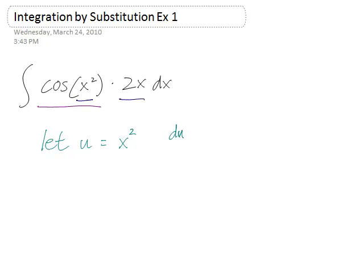then we have du/dx is 2x. And so if we kind of just cross-multiply this and divide, we'll have dx is du over 2x.